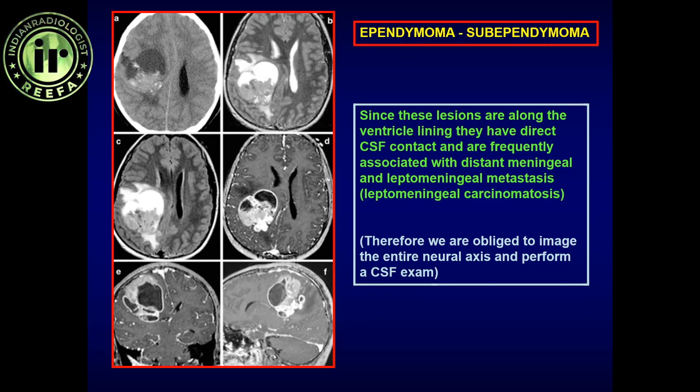This case of ependymoma can be confused with glioblastoma multiforme, but it turned out to be ependymoma. In the sagittal and coronal sequences it extends and abuts the ventricular lining, so a full neural axis examination must be performed. Critically, when the patient is in the MR scanner, the clinician must be called about herniation — because mass effect and herniation can decompensate and kill the patient within a day. The patient should not go home from this point.